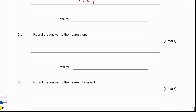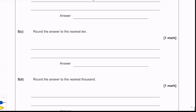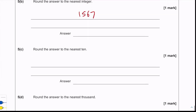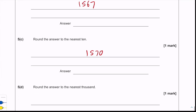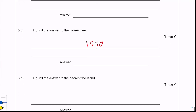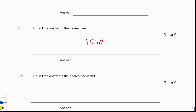Part c: round the answer to the nearest ten. We look at the single units column — it's a seven — so we need to round up to get 1,570.